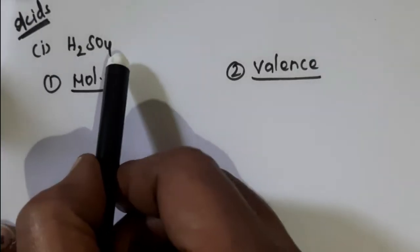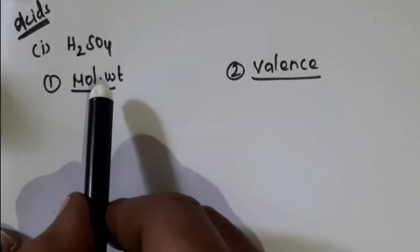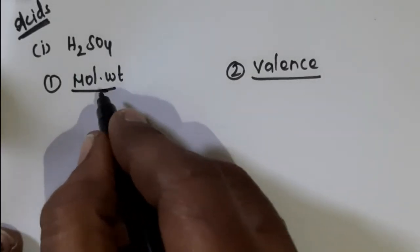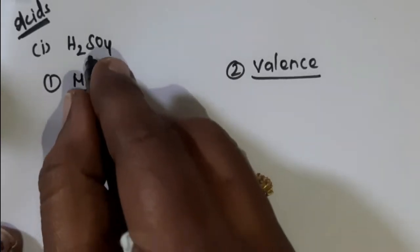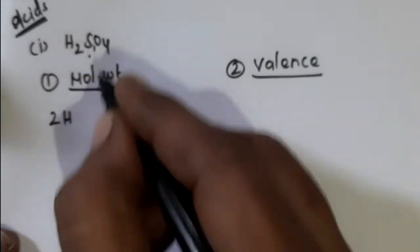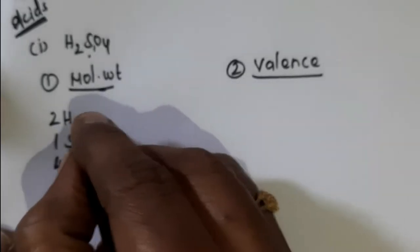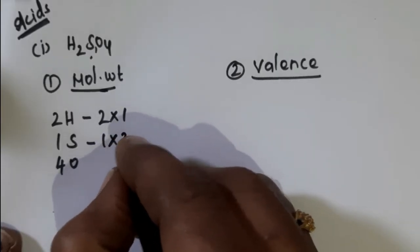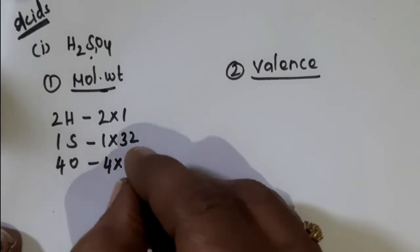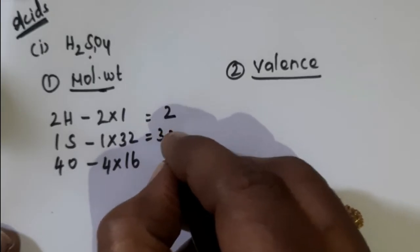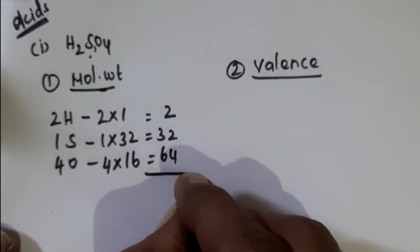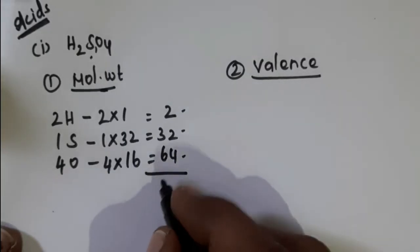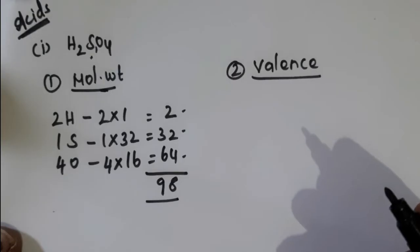The first problem is H2SO4, sulfuric acid. To find out the equivalent weight of your compound, just follow two steps: first calculate the molecular weight of the compound, then calculate the valence. To calculate the molecular weight, write the number of atoms present in the molecule. H2SO4 has 2 hydrogen, 1 sulfur, and 4 oxygen. So: 2 × 1 (atomic weight of hydrogen) = 2, 1 × 32 (sulfur) = 32, and 4 × 16 (oxygen) = 64. Summing all atomic weights gives a molecular weight of 98 for H2SO4.